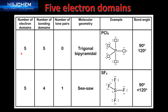We'll start with five electron domains around the central atom. In our first example, all five electron domains are bonding domains with zero lone pairs of electrons. The molecular geometry is trigonal bipyramidal. An example is PCl5, and you can see the Lewis structure here. The bond angles are 90 degrees and 120 degrees.